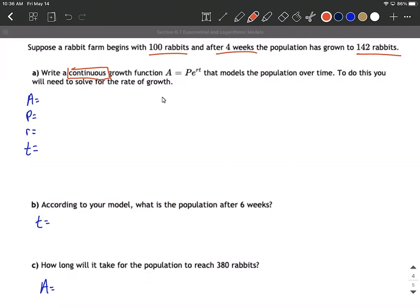Okay so let's fill in the information we know. We start with 100 rabbits. That's going to be a value for P. After four weeks that's a time frame. We now have 142 rabbits. That's an accumulated amount. We don't know our rate, which kind of makes sense. They told us we had to solve for our rate of growth. So let's fill this all in. 142 equals 100 e raised to the r times four.